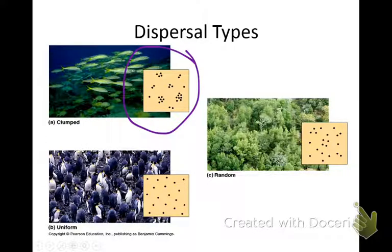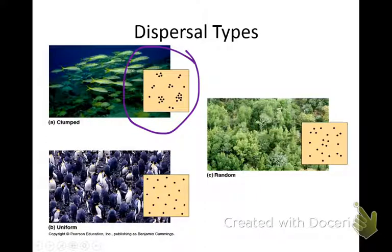Uniform dispersion usually represents territorial or favorable environments. The example shows penguins, but think about trees — because they have such big roots, they have to be spread out. Big trees can't grow right beside each other. Some small flowers release a toxin so nothing will grow right around them. Uniform are organisms that grow in a uniform manner — corn planted in rows is a good way to remember it. Random dispersion has no apparent reason; they're just everywhere, like the trees shown here.